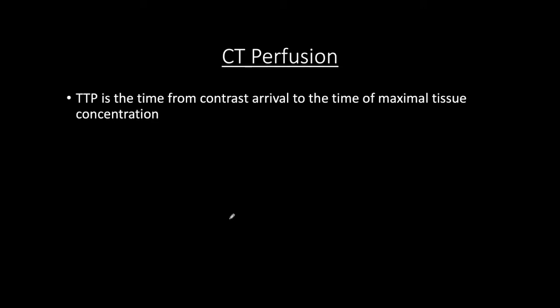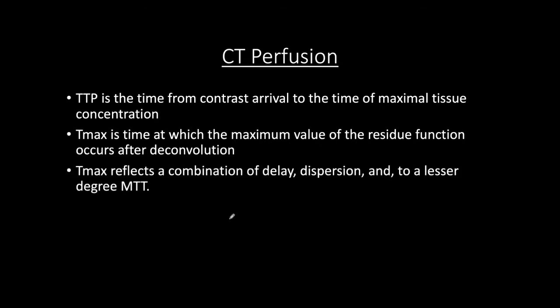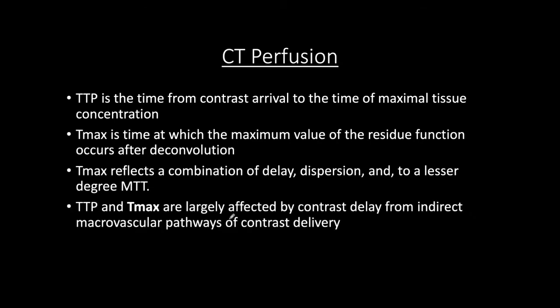Time to peak is the time from contrast arrival to the time of maximal tissue concentration. Tmax is the time at which the maximum value of the residue function occurs after deconvolution — in regular terms, it is a combination of delay, dispersion, and to a lesser degree mean transit time, describing how contrast distributes. Time to peak and Tmax are largely affected by contrast delay from indirect macrovascular pathways, whereas MTT operates at the microvascular level. Tmax does include MTT to a lesser extent.